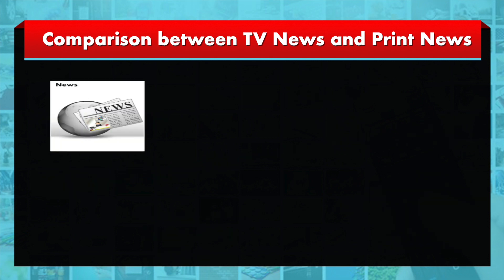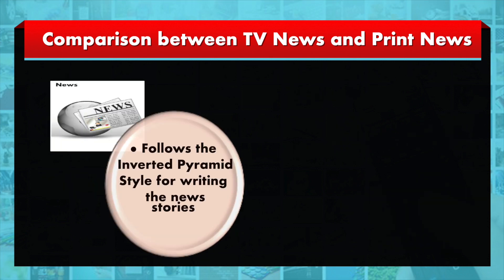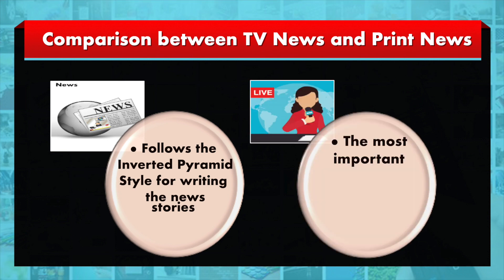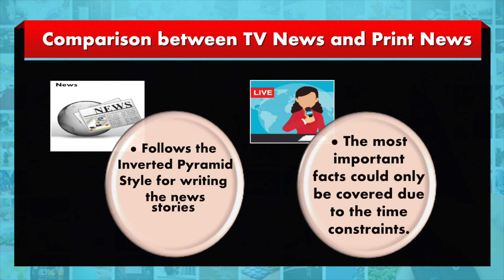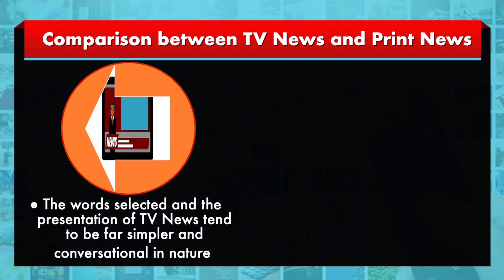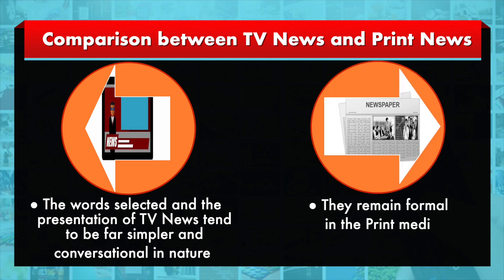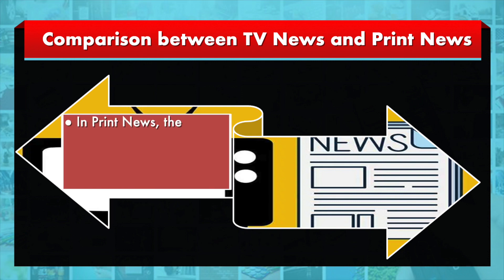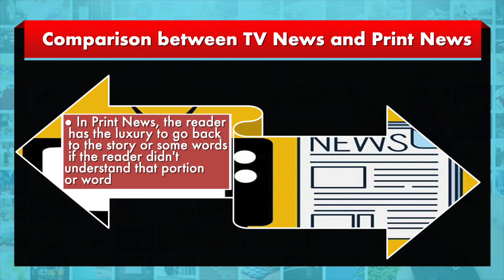Print news generally follows the inverted pyramid style for writing news stories, whereas in TV news only the most important facts can be covered due to time constraints. The words selected in TV tend to be far simpler and conversational, whereas in the print medium they remain formal. In print news, the reader has the luxury to go back to the story or certain words if they did not understand.